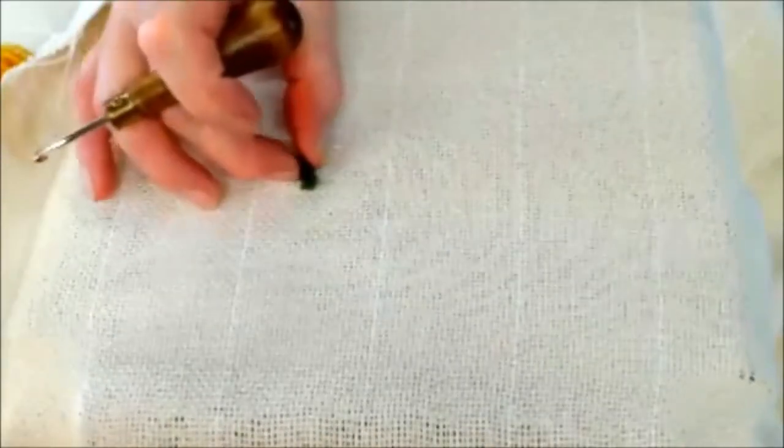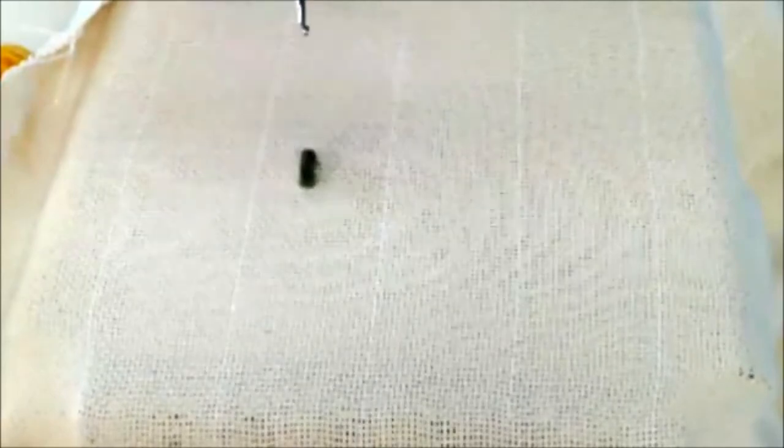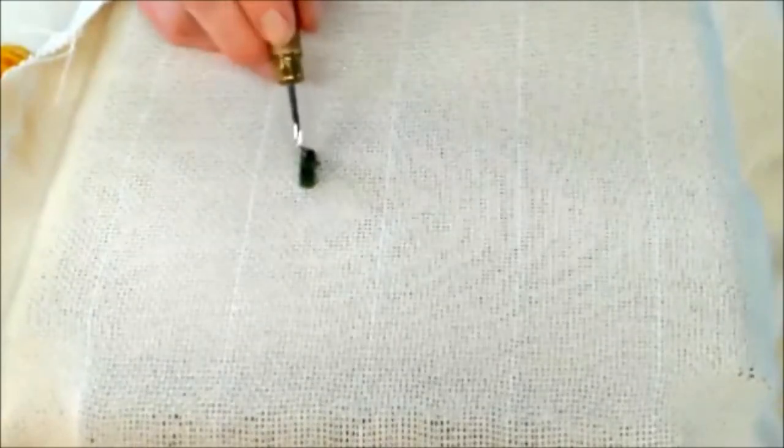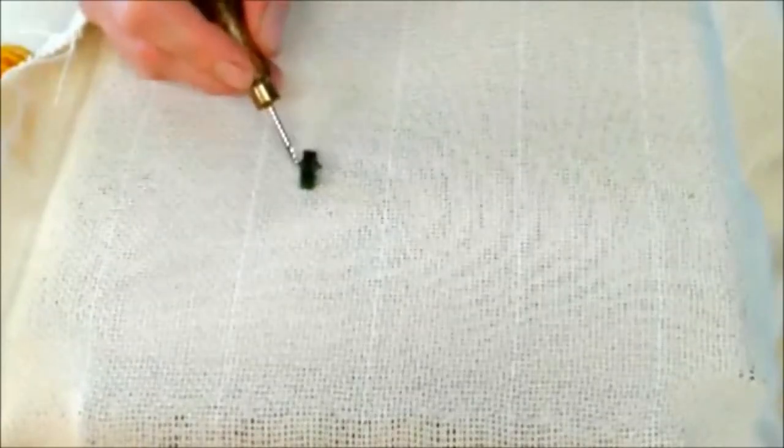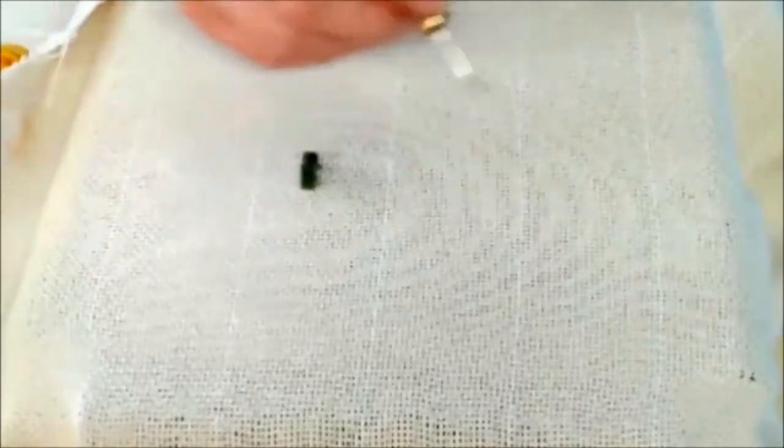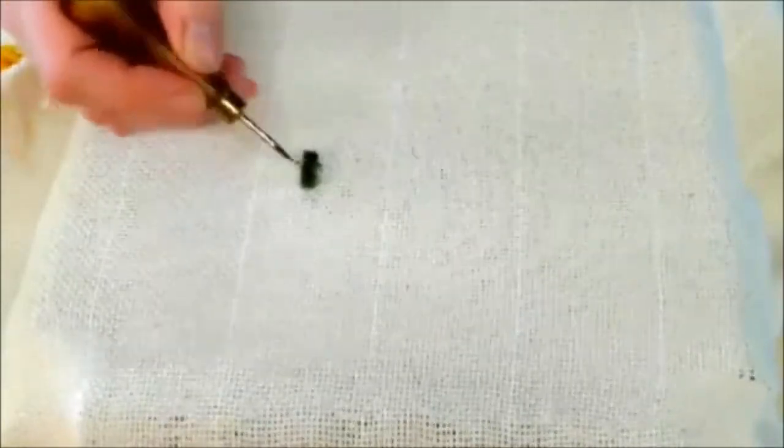It's that simple. You will take some practice to get your loops the same height. You may not want to have your loops the same height. Let's say you're doing a tree and you want it to stand out from your background. You may want your loops taller. That's fine. Pull them taller.